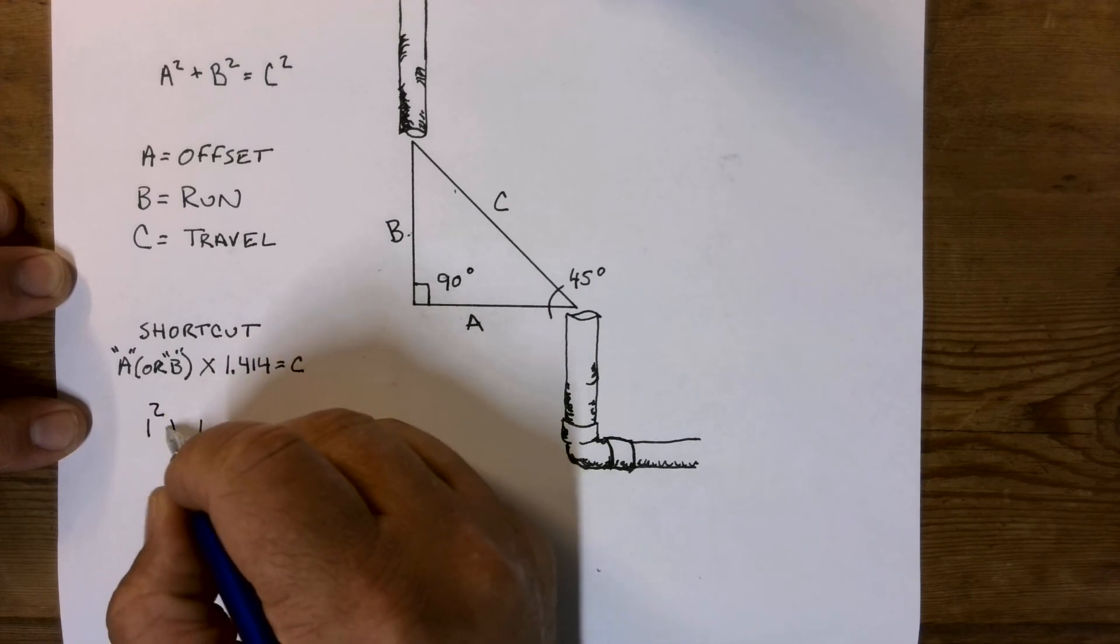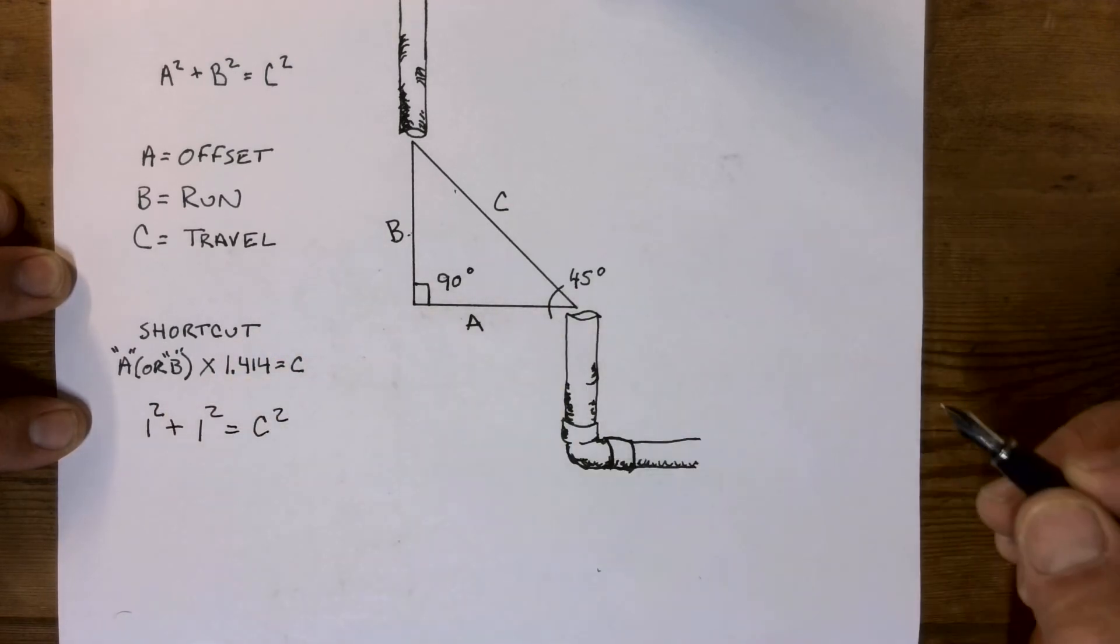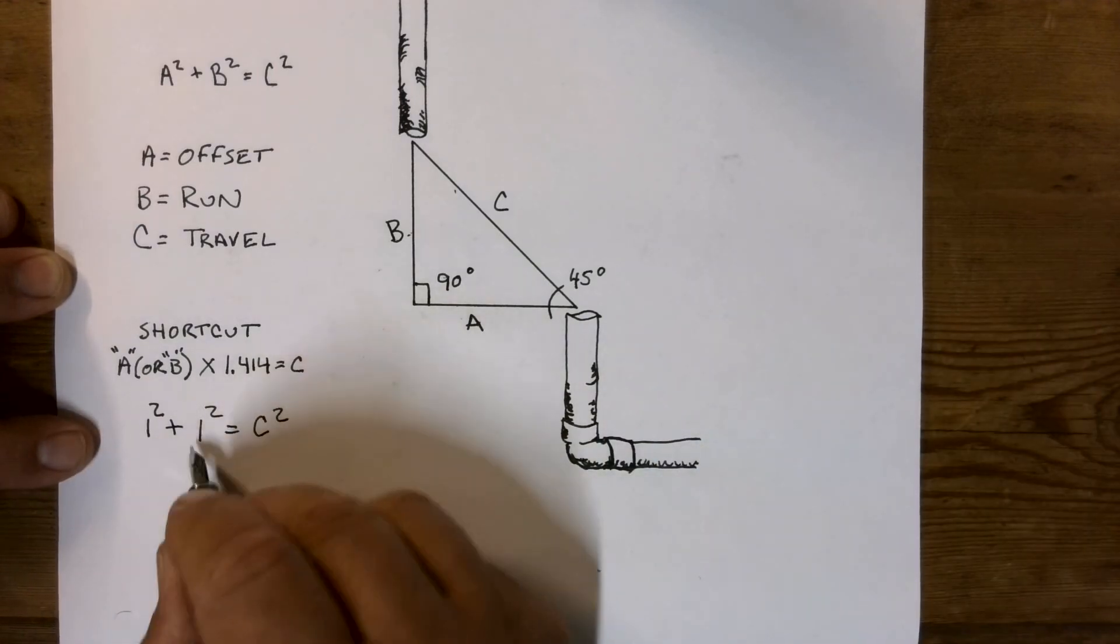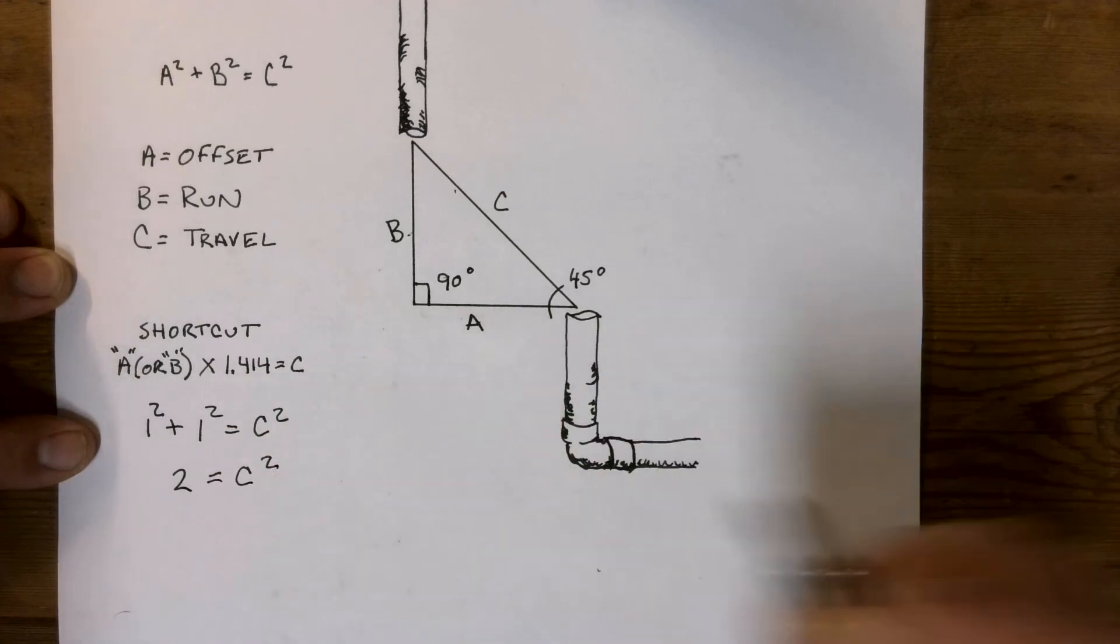So 1 squared plus 1 squared equals C squared. Well, what's 1 squared? 1 times 1 is 1. 1 plus 1 is 2. 2 equals C squared.